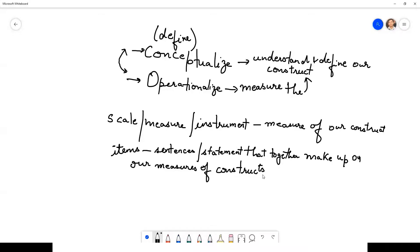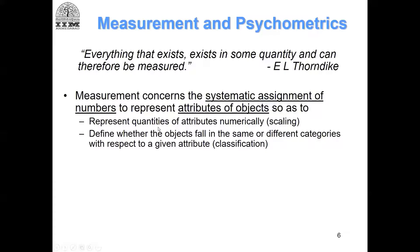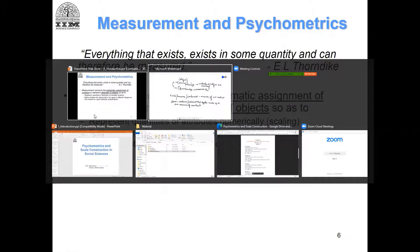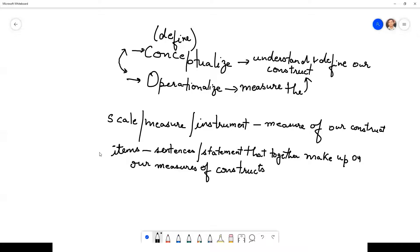Remember this definition: measurement concerns the systematic assignment of numbers to represent attributes of objects so as to represent quantities numerically - that is called scaling. It also defines whether objects fall in the same or different categories with respect to a given attribute. Let me take you through what I am trying to say. Measurement concerns the systematic assignment of numbers. When you develop these items, you will have scales.